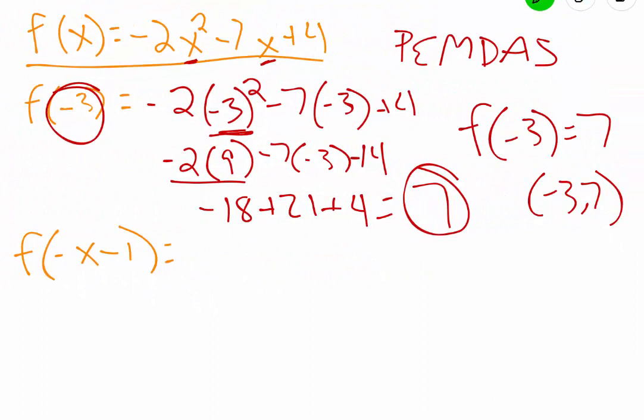Now, to do f of negative x minus 1, we are doing the same thing. We're going to take the same function. But now we're plugging in a negative x minus 1 for x instead. So that is a negative 2 times x squared, where x is negative x minus 1 squared, minus 7 times that x, which again is a negative x minus 1, and then plus 4.